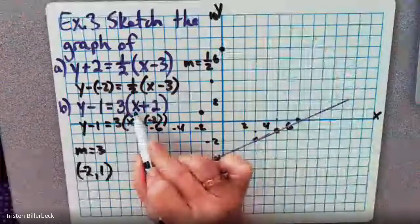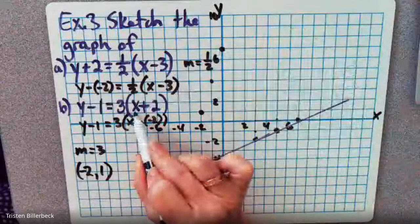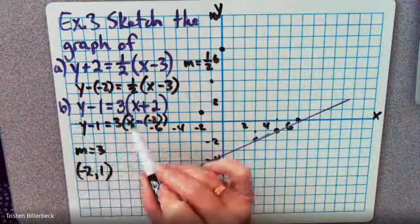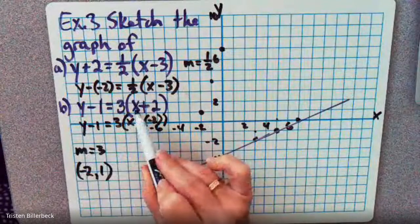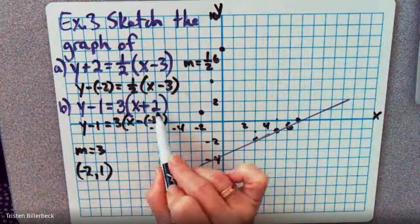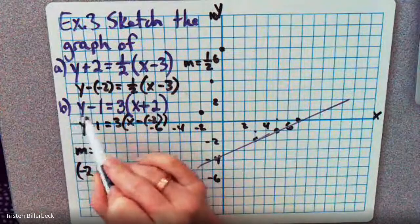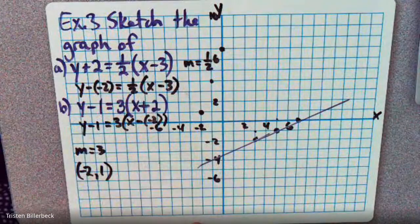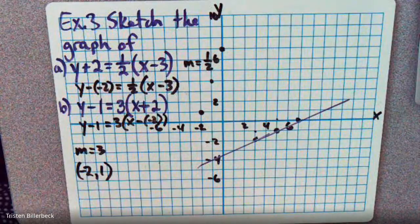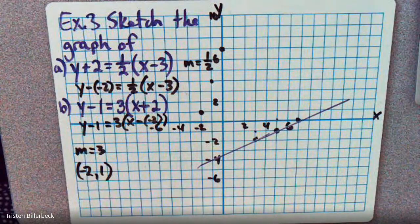So when X is 0, Y should be 7. 3 times 2 is 6, and 6 plus 1 is 7. So that is true. So our second equation looks like this.